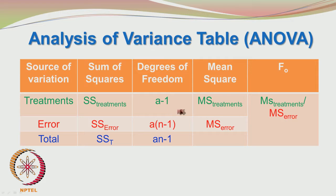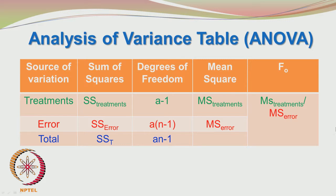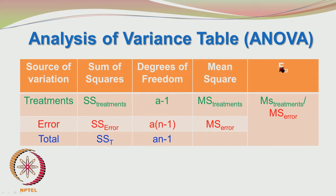We have only A-1 independent quantities. The degrees of freedom for the error: for A treatments with N repeats, you have A into N-1 degrees of freedom. We divide the sum of squares by the degrees of freedom to get the mean square treatments, and divide the sum of squares of the error by degrees of freedom for the error to get mean square error. The ratio of these two mean squares gives us the F value, and then we do the F test.